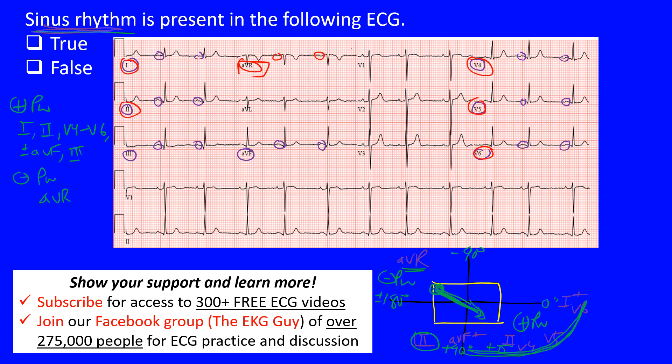That covers the morphology, but that's not all. You must also confirm that P waves precede the QRS complexes — one P wave for every QRS complex. Additionally, in sinus rhythm you typically see a regular rhythm where the R-to-R intervals are consistent throughout.